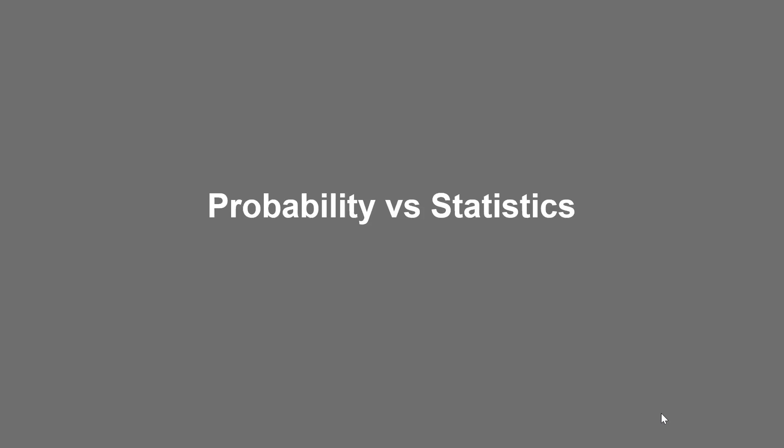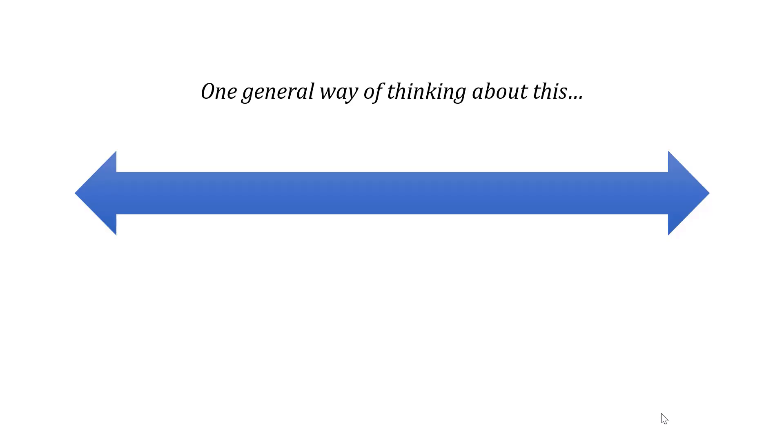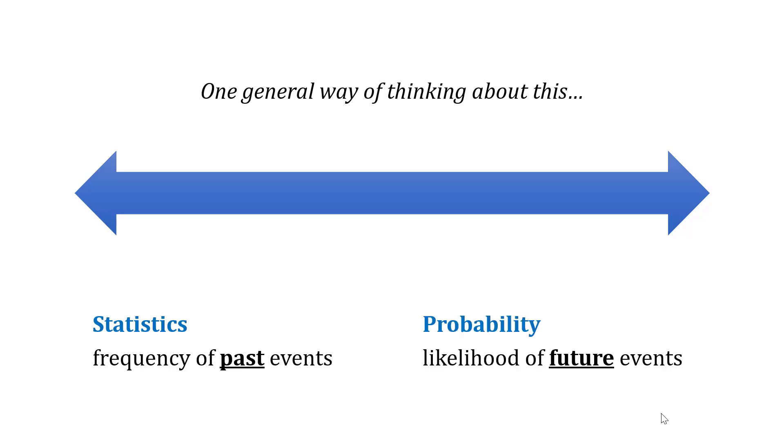Before we dive into probability, it's important to talk about the distinction between probability and statistics. One general way of thinking about this is that statistics look at the frequency of past events, and probability looks at the likelihood of things in the future. This is a generalization, but it's one way to think about it.